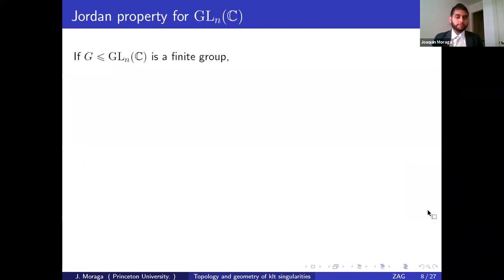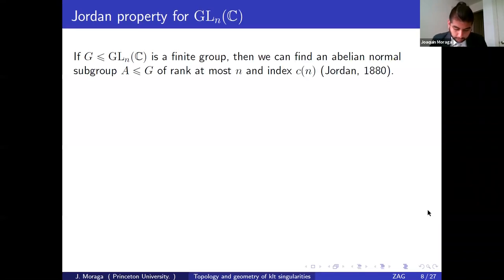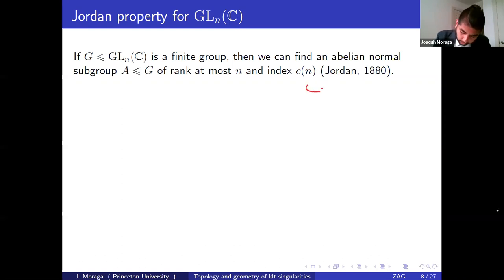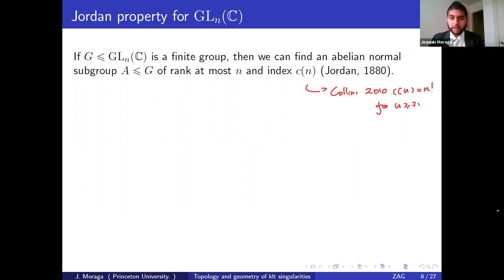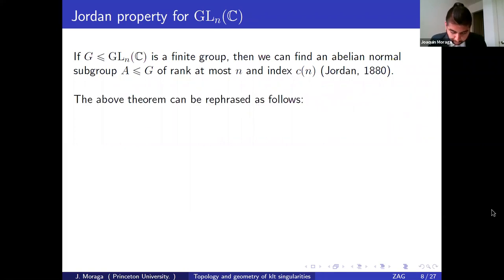Now let's talk about the Jordan property. The Jordan property says: if you have a finite group in GL_N(ℂ), then you can find an abelian normal subgroup of rank at most N and index at most C_N, where C_N is a constant that only depends on the dimension. Collins recently proved that you can take C_N to be N factorial for N larger than 71.